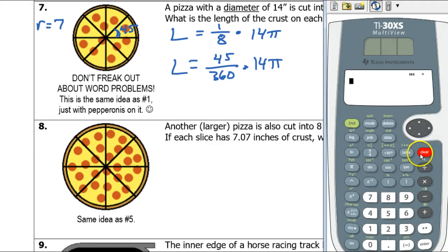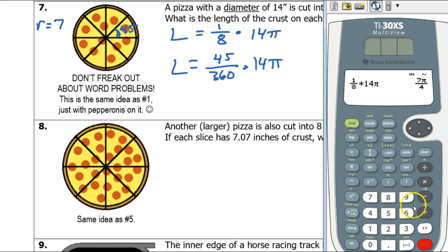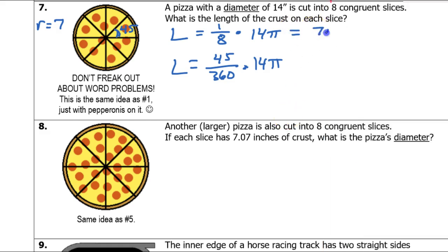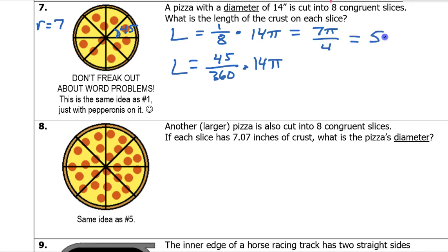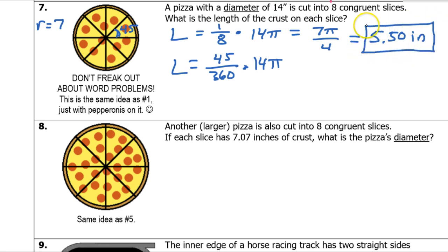So putting 1/8 times 14π into the calculator — that's 7π over 4 — which equals 5.50 inches. The 49 has to round up to 50, so 5.50 inches. That's the length of the crust — the crust is the arc length.